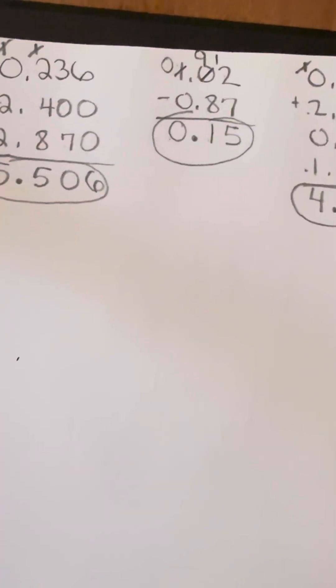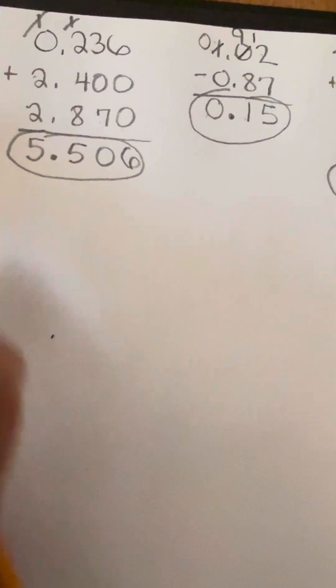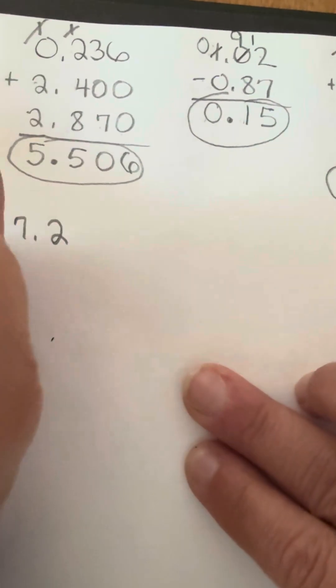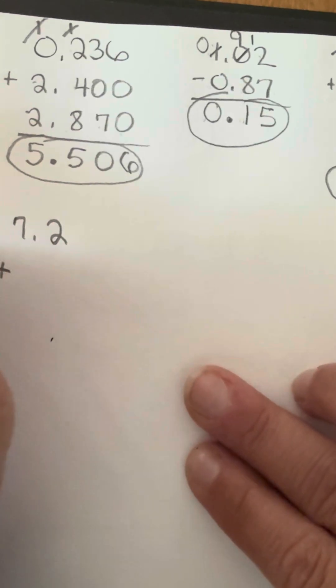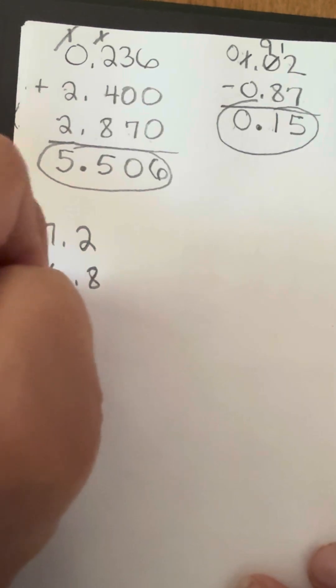We're going to write down the numbers that we had in each of those amounts in order to solve this. So we're going to start off with the first one, which was 7.2. We are doing an addition problem because we're adding all the times together. So we have 6.8, and then our last one is 8.25.